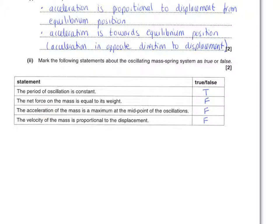Thirdly, the acceleration of the mass is a maximum at the midpoint. Well, in our definition we said the acceleration is proportional to displacement. The displacement at the midpoint is zero, so that means the acceleration must be a minimum, leading this statement to be false. And finally, the velocity of the mass is proportional to the displacement. This is a misleading statement. It's just mixing the word velocity in there. It should be acceleration is proportional to displacement, as you have hopefully already stated in your definition.